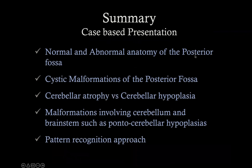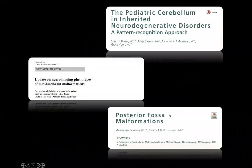Our presentation will be case-based. I will go through the normal and abnormal anatomy, cystic malformations, differences between cerebellar atrophy and cerebellar hypoplasia — which is relevant — pontocerebellar hypoplasia, and a pattern recognition approach. These are some of the references that I think are very helpful, and I will show some other references during this lecture.